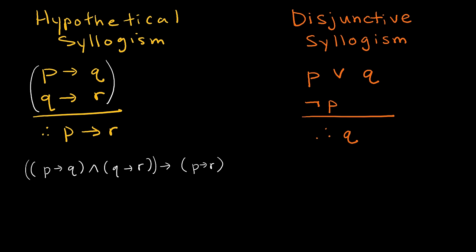Then we have the disjunctive syllogism — because this is a disjunction. We're saying P or Q, and then not P. So P or Q occurred, but it wasn't P, therefore it was Q. This makes a lot of sense: if P or Q must have occurred but P didn't occur, it makes sense Q must have occurred. As a tautology: (P or Q) and not P implies Q.